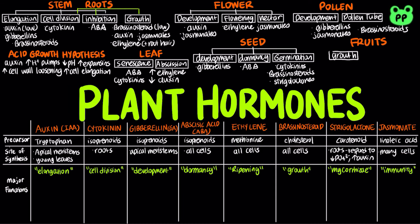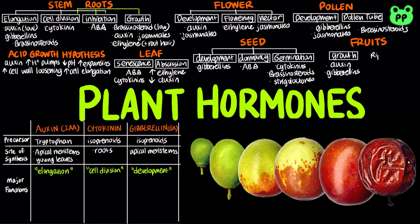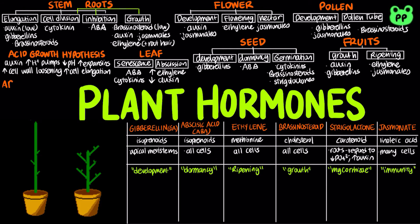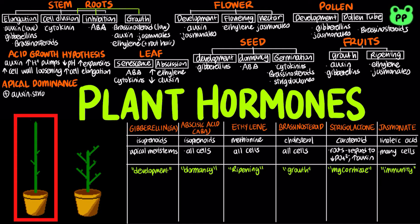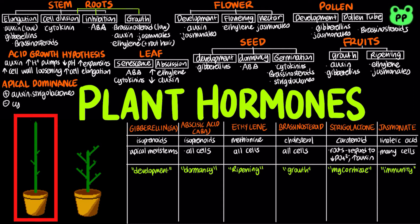The growth of fruit from ovary is stimulated by auxin and gibberellins. The ripening of fruit is stimulated by ethylene and jasminates. A combination of different hormones regulate apical dominance, which stimulates apical meristems and inhibits lateral buds, essentially making plants grow taller. Apical dominance is stimulated by auxin and strigolactones, and inhibited by cytokinins, which results in bushier plants.